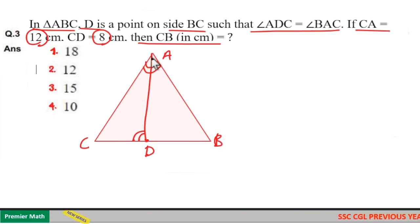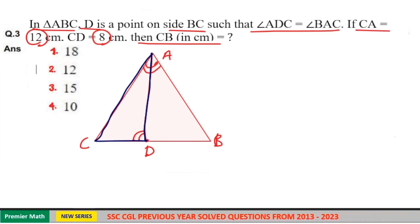If you take this smaller triangle and this larger triangle, these two triangles are similar because angle C is common. Angle C is common and angle A in the larger triangle and angle ADC in the smaller triangle are equal.